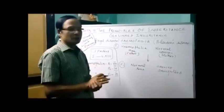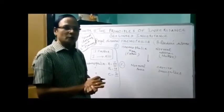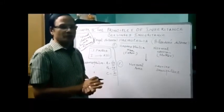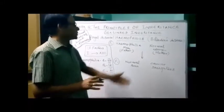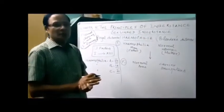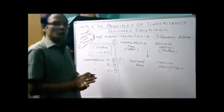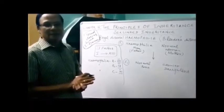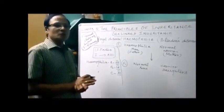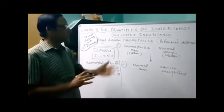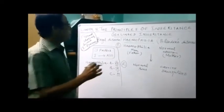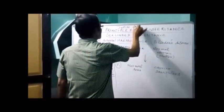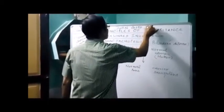But in the case of hemophilia persons, the blood fails to clot — there is no clotting of blood. Hence, various diseases result. This disease was first reported in Queen Victoria's family members. When her grandson met an accident, there was continuous bleeding.